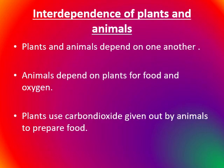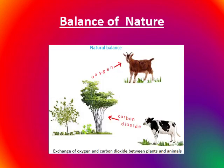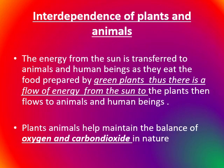Interdependence of plants and animals: Plants and animals depend on one another. Animals depend on plants for food and oxygen. Plants also use carbon dioxide given out by animals to prepare food. The energy from the sun is transferred to animals and human beings as they eat the food prepared by green plants. Thus there is a flow of energy from the sun to the plants, then to animals and humans.